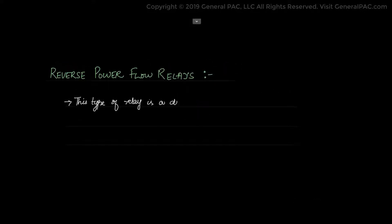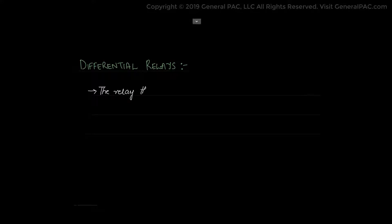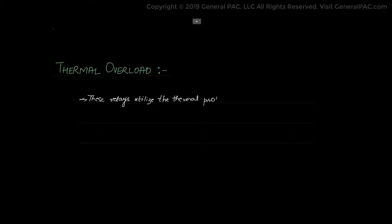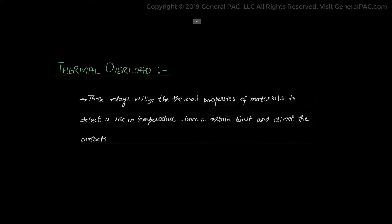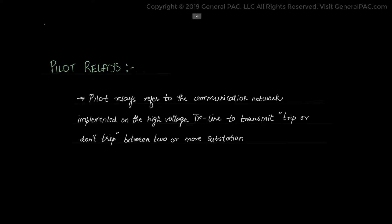Reverse power flow relays are directional protective relays that prevent power from flowing in a reverse direction. Differential relays are relays that operate when the phase difference of two or more identical electrical quantities exceeds a predetermined amount. Thermal overload relays utilize the thermal properties of material to detect a rise in temperature from certain limits and direct the contact from one position to another. Pilot relays refer to the communication network implemented on high voltage transmission lines to transmit either a trip or don't trip signal between two or more substations.